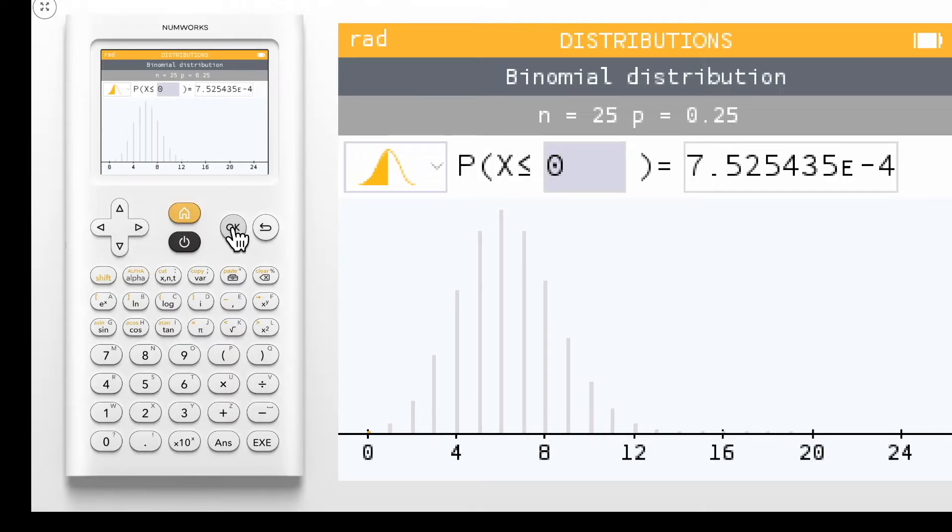To change the value of x in the probability statement, click OK or simply type the value.